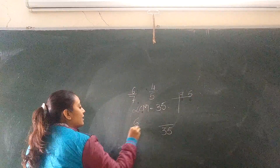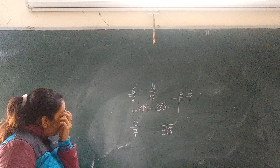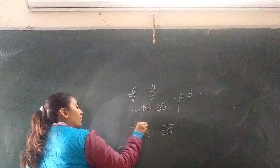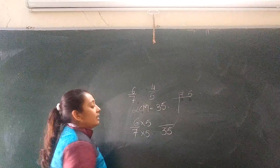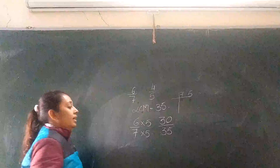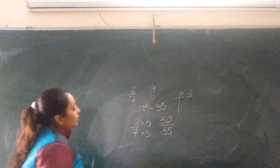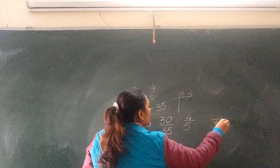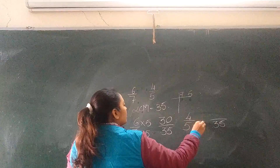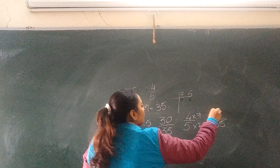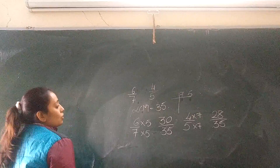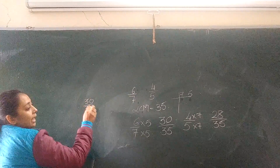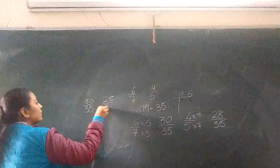Now let's take 6 upon 7 first. In the 7 times table, 35 comes at 7 × 5, so we multiply 6 by 5, that would be 30. So 6/7 becomes 30/35. Same with 4 upon 5 — LCM is 35, and 5 × 7 = 35, so we multiply 4 by 7, that gives 28. So 4/5 becomes 28/35.